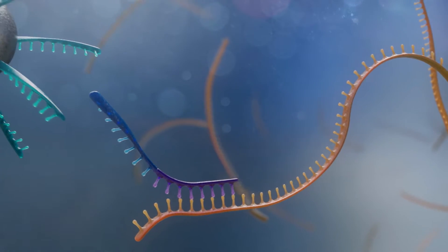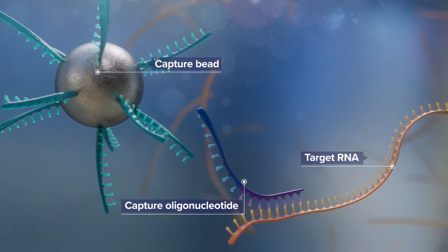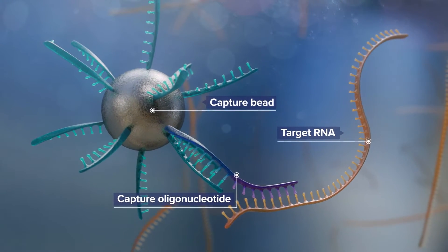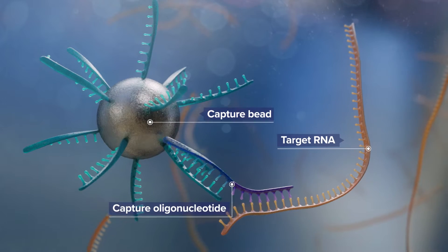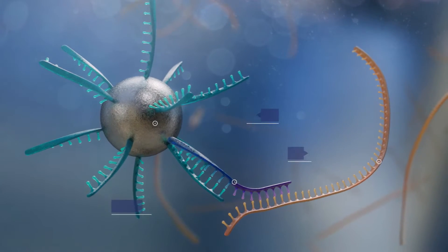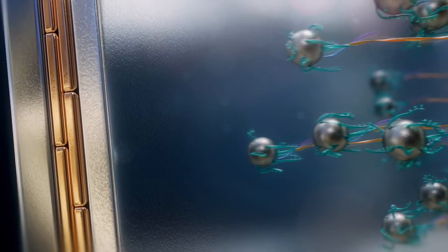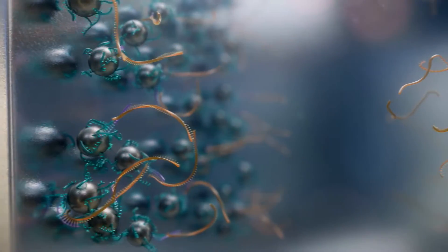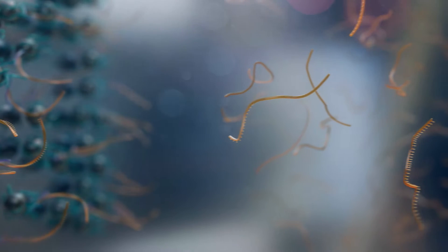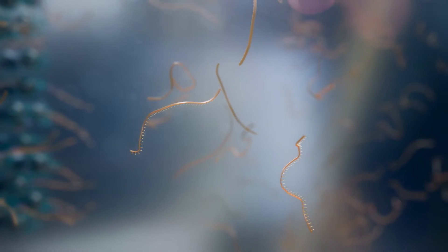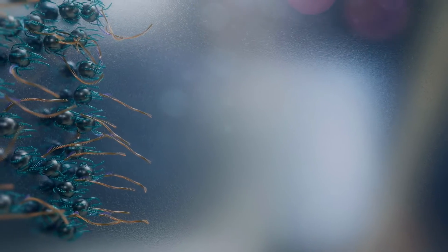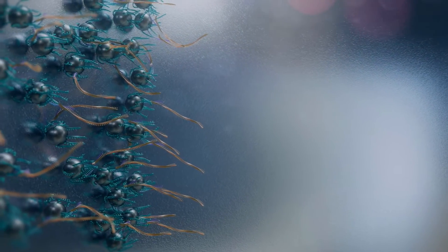During the target capture step, capture oligonucleotides hybridize to target genetic material of the pathogen. Capture oligonucleotides also attach to magnetic beads. The magnetic beads, with the attached oligonucleotides and target nucleic acid sequences, are isolated from the specimen using a magnet. The magnetic beads are washed to separate the target sequences from non-targets, debris, and potential inhibitors.